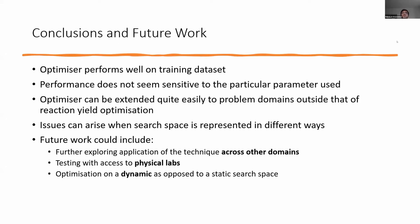For future work, applying this to other domains in chemistry would be valuable, and access to physical labs would obviously help. One key limitation is that you need to provide the optimizer with the complete set of possible experiments upfront. In practice it would make sense to dynamically update that list — for example, removing combinations known to give poor yield — so optimization on a dynamic search space would be a useful direction.